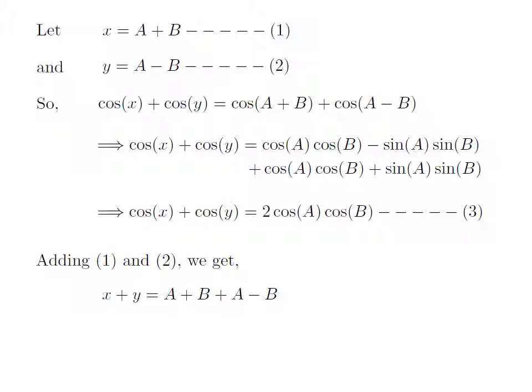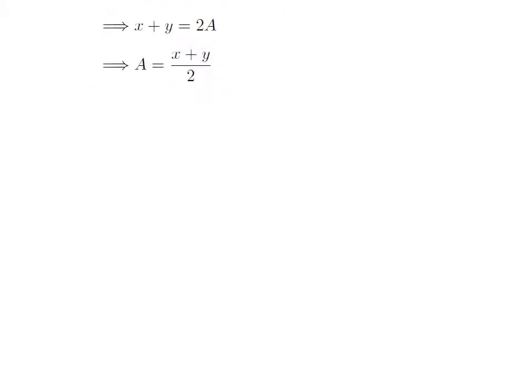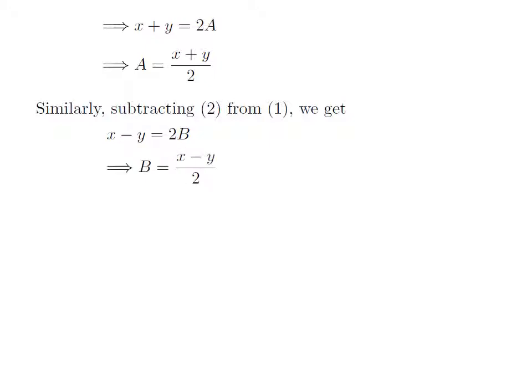Now let's find out the value of a and b in terms of x and y. First, add expressions 1 and 2. We get x plus y is equal to a plus b plus a minus b. In the above expression, b minus b cancels out, so we are left with a plus a. Thus x plus y is equal to 2 times a, which gives a is equal to x plus y divided by 2. Similarly, if we subtract expression 2 from 1, we get x minus y is equal to 2 times b, which implies b is equal to x minus y divided by 2.